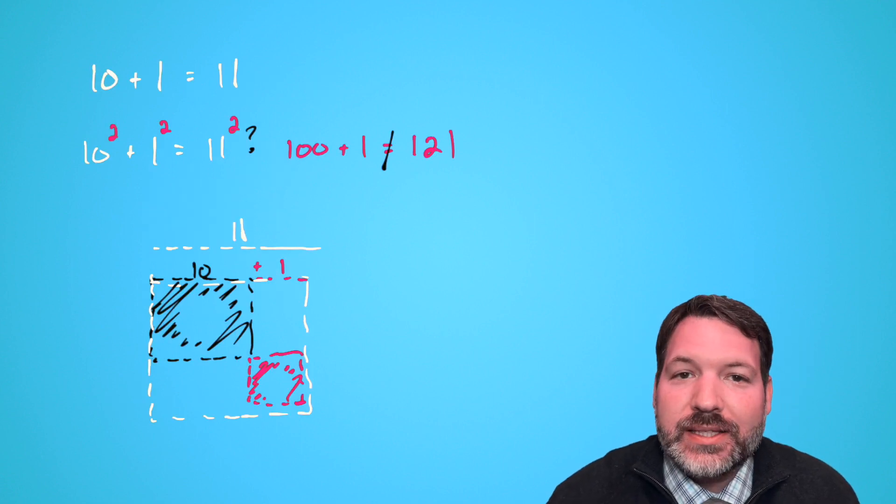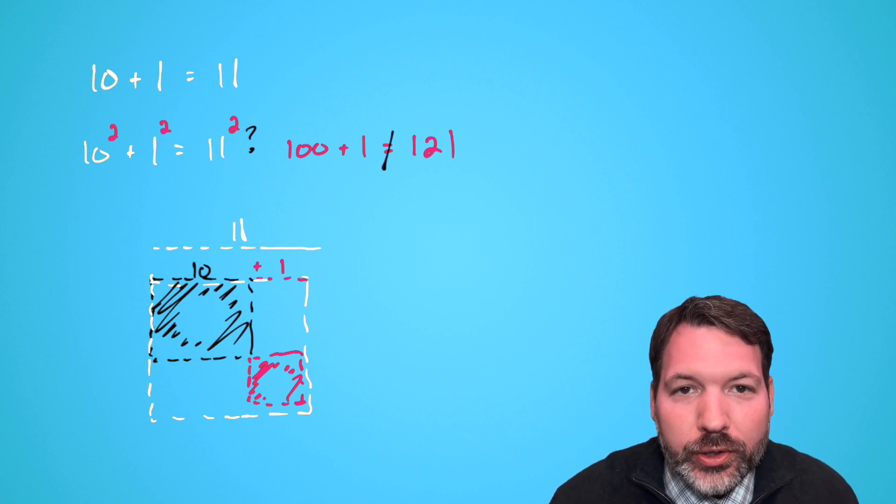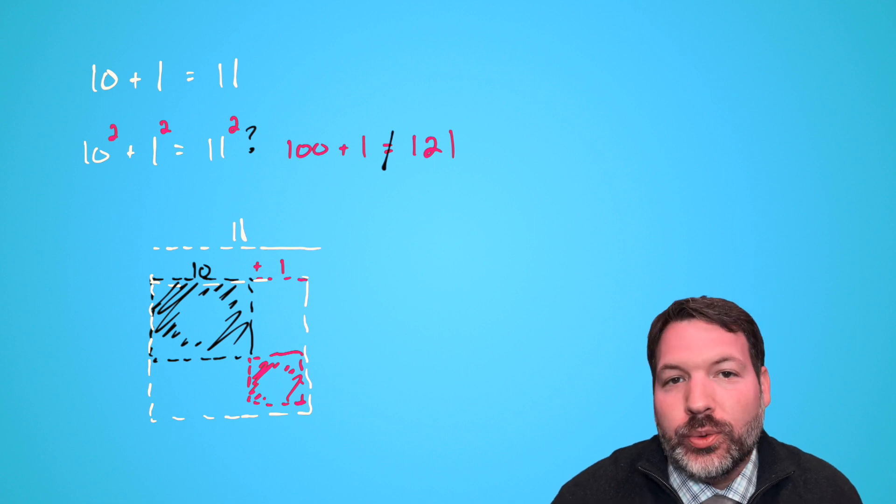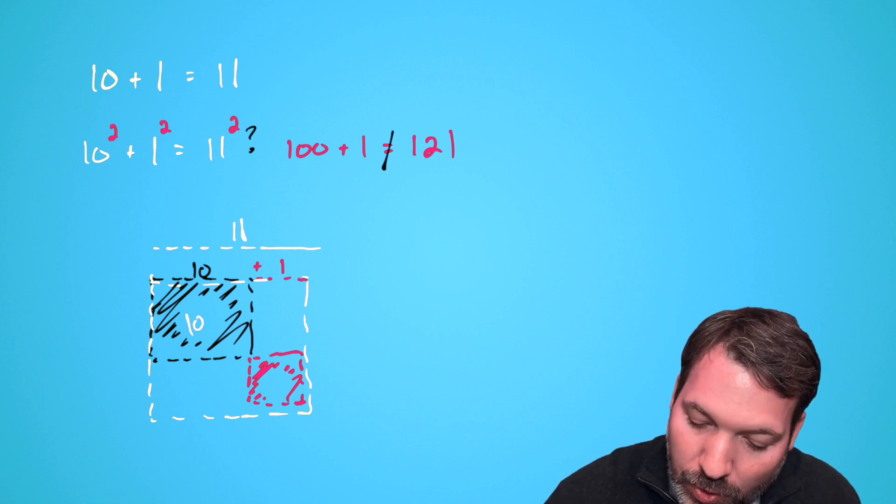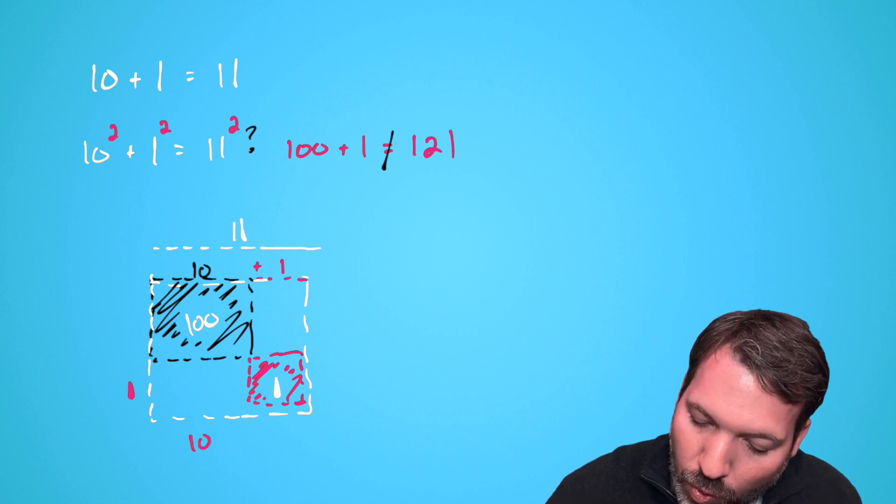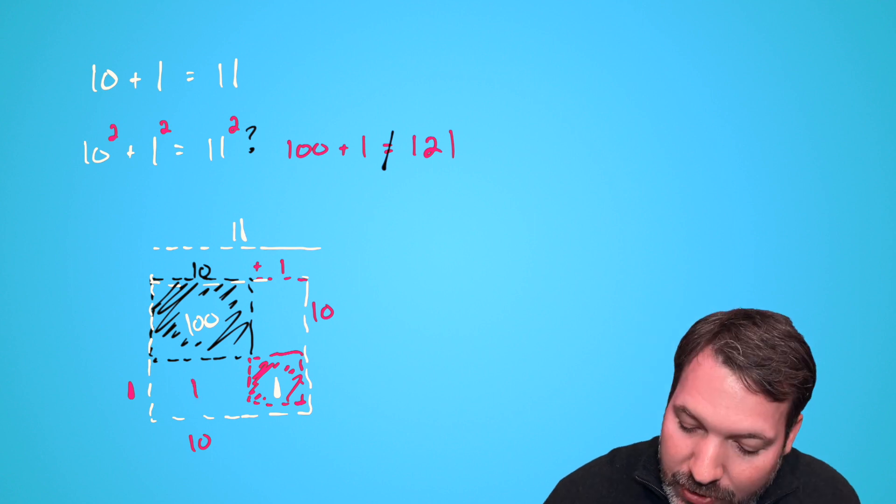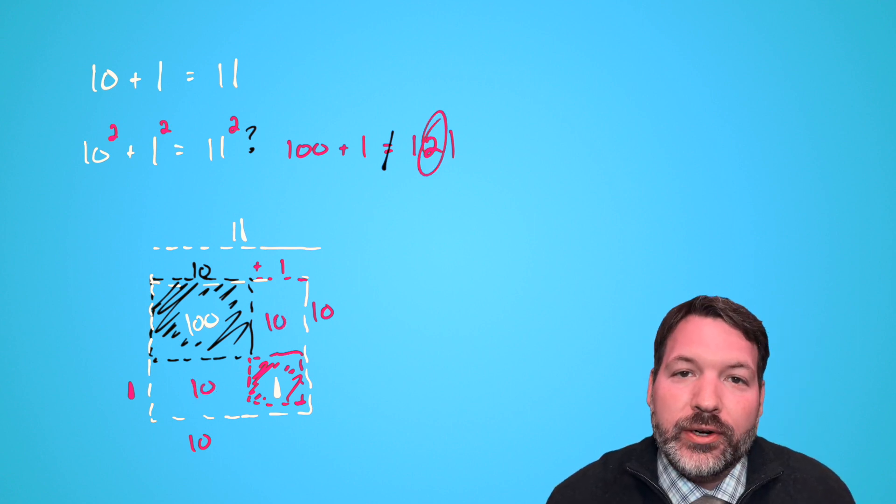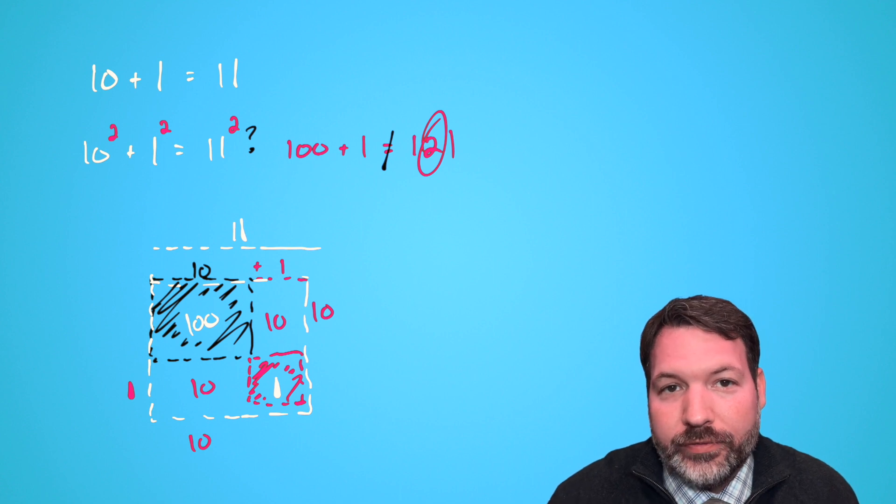It's actually precisely these two rectangles that account for our example earlier, why 10² + 1² is 20 less than the actual 11². Yes, the 10 square has an area of 100, and the 1 square has an area of 1, but then these other two rectangles would be 1 by 10 rectangles, each of which has an area of 10. 10 + 10 = 20, and that's why our sum was 20 units off.